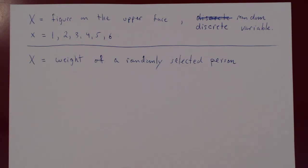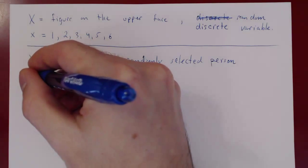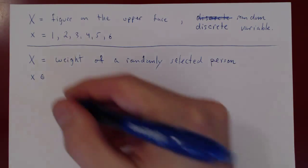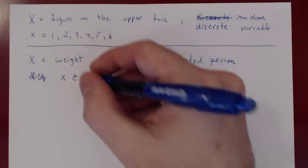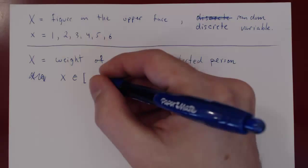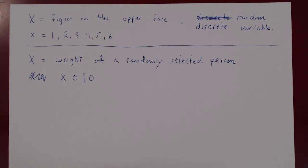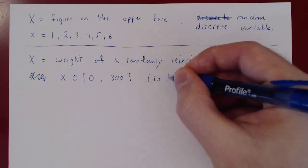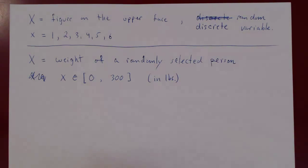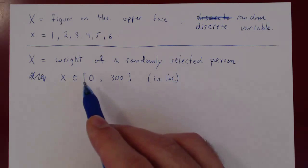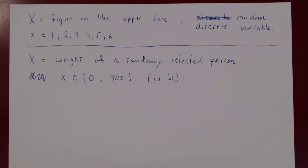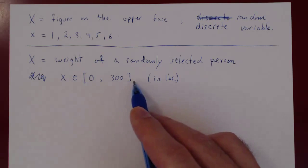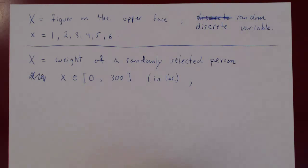As you take people at random you'll get different values for their weight. You can't list all possible weights — the weight will vary over an interval. X will belong to values ranging over an interval; you could go from zero all the way up to, say, 300. You can't list all values from zero to 300, so when the values of X range over an interval of real values, X is a continuous random variable.